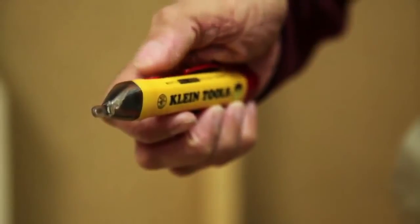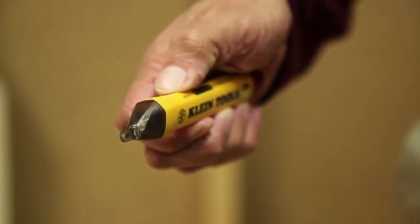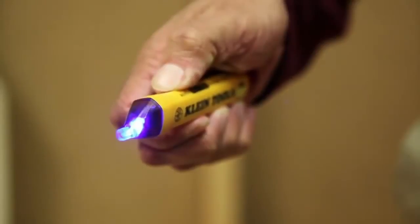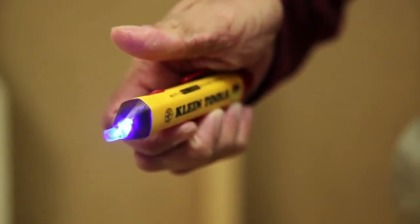To activate silent mode, make sure the tester is powered off, then press and hold the power button until the LED light illuminates. No audible indication should be heard.